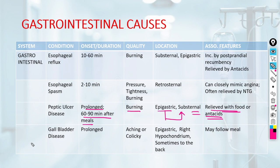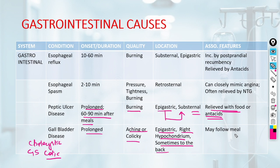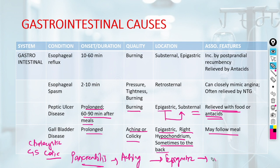Chest discomfort can also be due to gallbladder diseases including cholecystitis and biliary colic, which may mimic acute cardiopulmonary diseases. The pain is prolonged, aching or colicky, located in the epigastrium and right hypochondrium, sometimes radiating to the back, and follows meals. Pain in pancreatitis is also typically aching, epigastric, radiating to the back, relieved by sitting, and increased in the supine position.